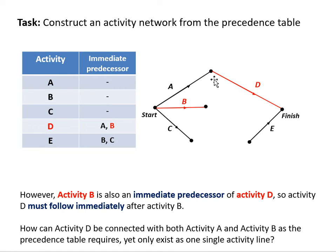Now this is impossible. It can't be at two places at once, and we can't draw an activity twice. That's one of the rules of these activity networks. You can only draw one line. So we're at a bit of a problem here. How can we possibly connect A and B to activity D with a single line?